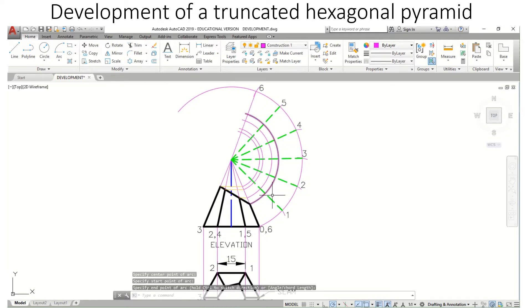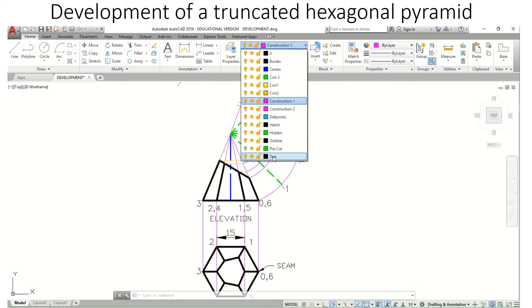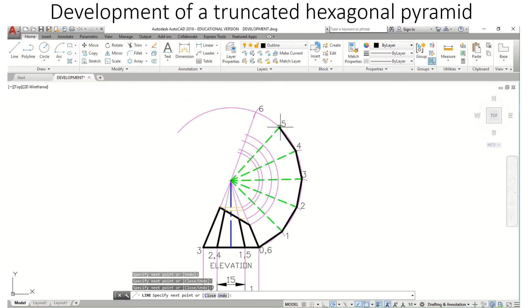This is where our numbering system comes in. We're going to draw a straight line, let me get the base. Since it's a hexagonal pyramid and the base has a straight line, we're going to get it from there.